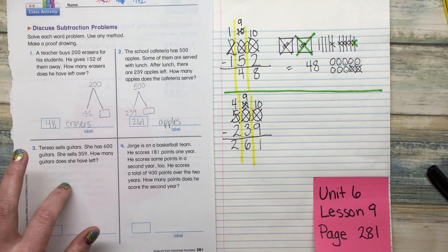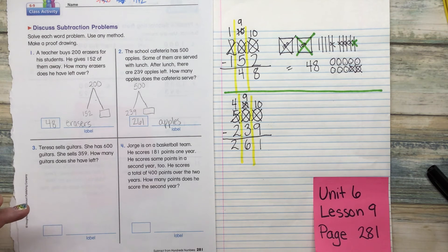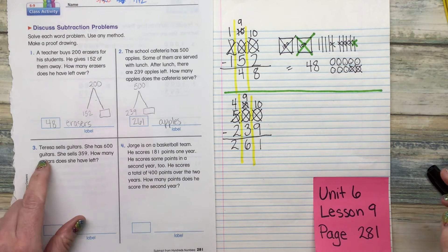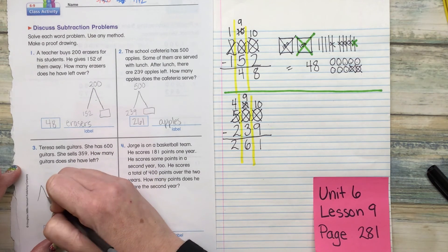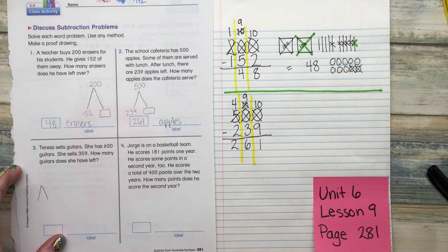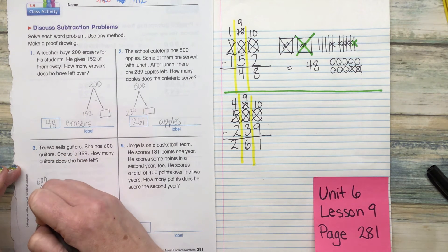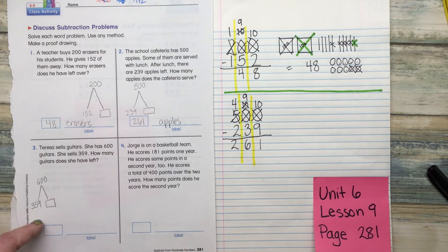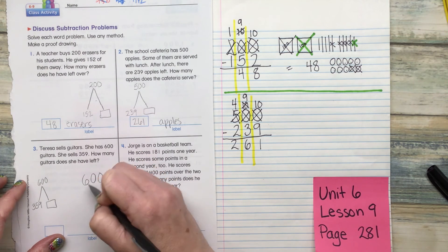So for these ones, I am going to go ahead and read them to you. And I'll write down the equation with you, but you are solving these ones on your own. Teresa sells guitars. She has 600 guitars. She sells 359. How many guitars does she have left? So there's our math mountain. And our equation should look like this.